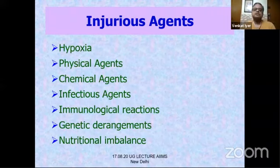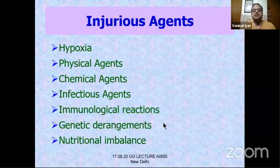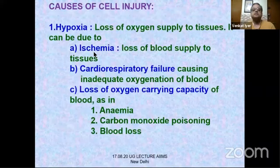The list of injurious agents is very large: physical, chemical, infectious, immunological, genetic, nutritional, and more. The standard injury model, however, is hypoxic injury.